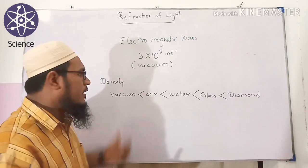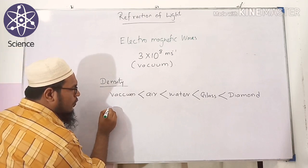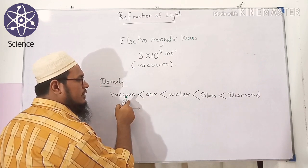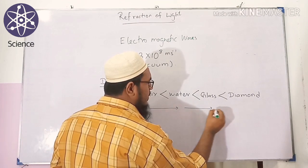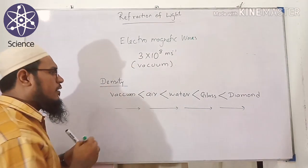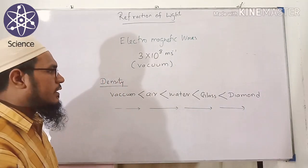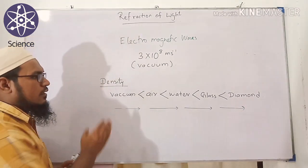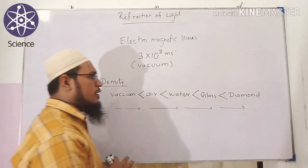Therefore diamond is denser than glass, then water, then air, then vacuum. When light rays travel from vacuum to air, the speed reduces because air is denser than vacuum. When traveling from air to water, water to glass, or glass to diamond, the speed reduces because the density increases. When the speed reduces, the angle changes — that is what we call refraction.